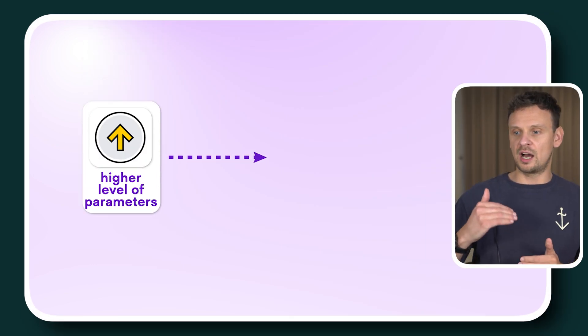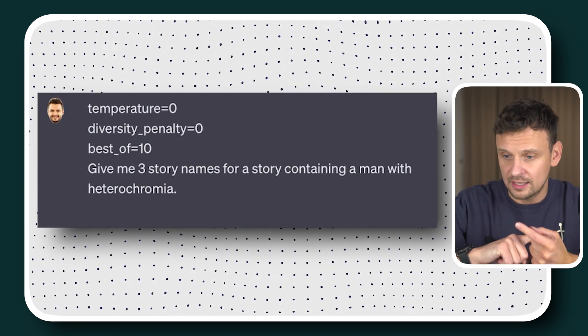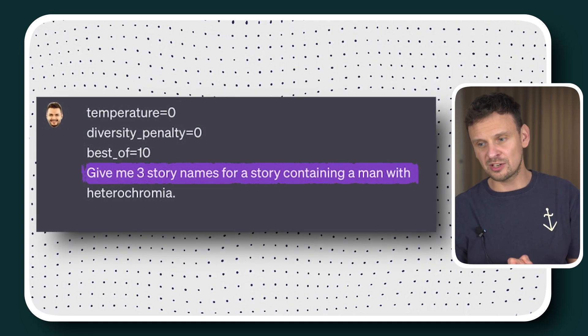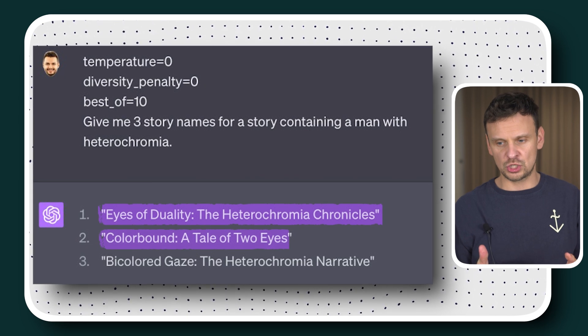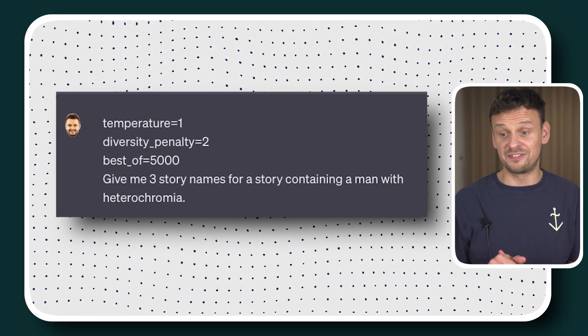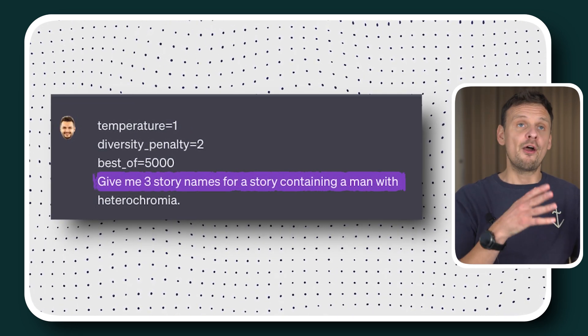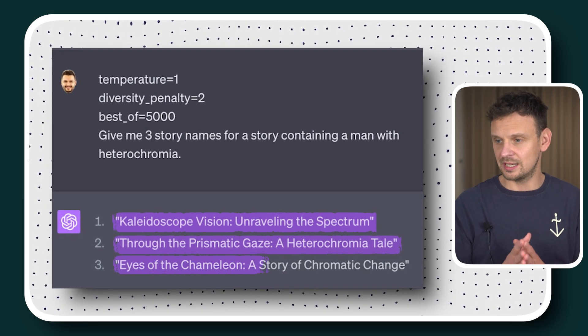With low parameters — temperature 0, diversity penalty 0, best of 10 — the same blog name prompt returns just one answer: 'Tri-Legged Care: A Comprehensive Guide to Caring for Three-Legged Horses.' Simple and clear. In another example, high parameters generate story titles like 'Kaleidoscope Vision,' 'Through the Prismatic Gaze,' and 'Eyes of the Chameleon,' while low parameters yield 'The Eyes of Duality' and 'The Heterochromia Chronicle.' The higher the parameters, the more obscure, creative, and bizarre the outputs — it's up to you how you use them.